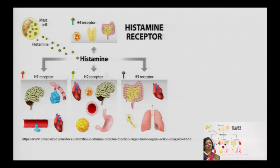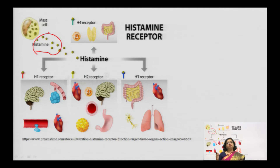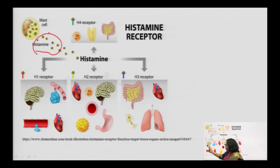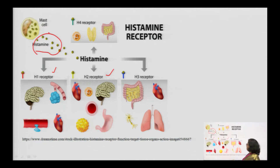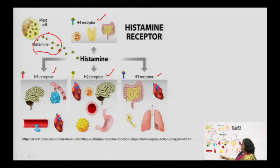See the images. You can see here a mast cell — just like a ball structure — with granules that contain histamine. The mast cell releases histamine, and this release is mediated through receptors. There are four receptors: H1, H2, H3, and H4. These are images of the various organs that contain H1, H2, H3, and H4 receptors as I described in the tabular form. For example, H1 receptors are found in the brain, heart, smooth muscle cells, and so on.